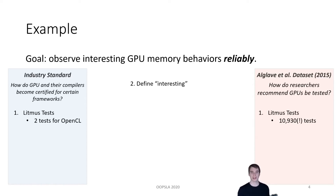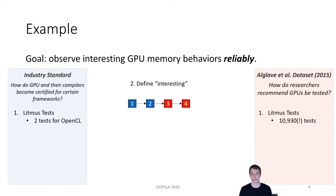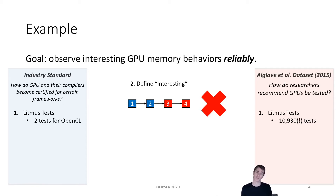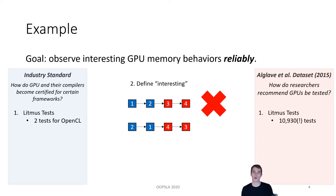We haven't yet defined what exactly we mean by interesting. Let's consider, for example, an execution where thread one's instructions execute in order — that is, one, two — and then thread two's instructions execute in order — that is, three, four. Is this interesting? Well, not really. This is an intuitive, allowed execution. Instead, let's look at the case where each thread's second instruction appears to execute before the first — that is, two, one, four, three. This reordering of instructions within each thread, which is a whole lot less intuitive and can be confusing for users, is what we call a weak behavior, and this is the set of behaviors we're interested in for this paper.